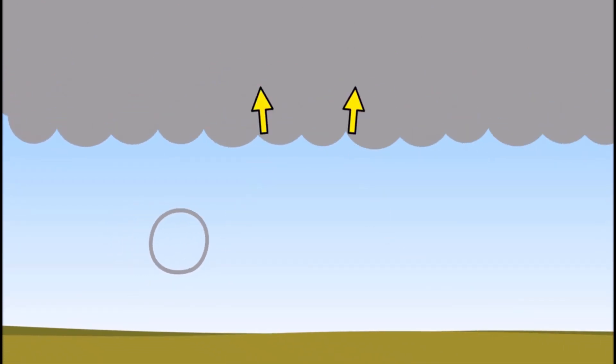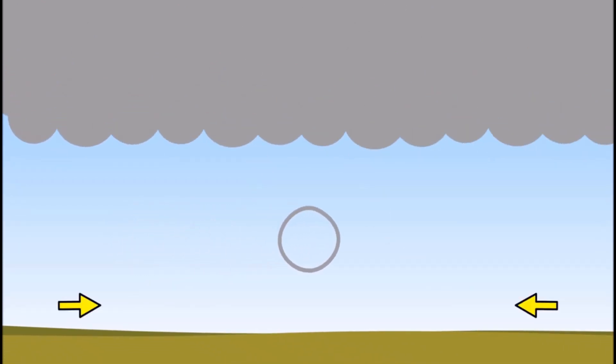Winds high in the atmosphere travel faster than the winds at the surface, and there is also a temperature difference — the air higher up is cooler while the air down below is usually warmer. This difference in wind speed and direction creates wind shear, the interaction between the two layers moving at different rates. This causes the area between the layers to begin rotating, forming a horizontal column of rotating air.